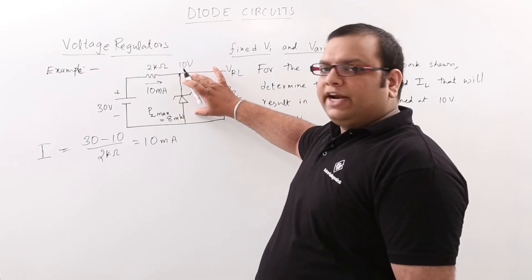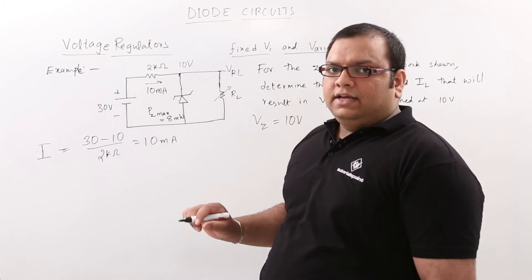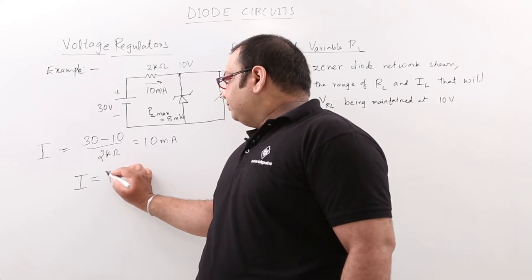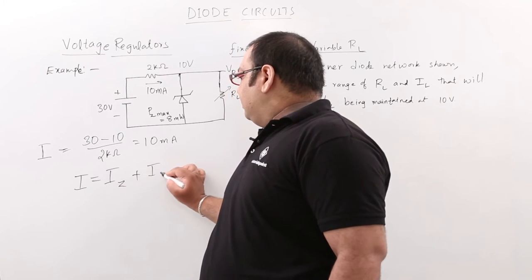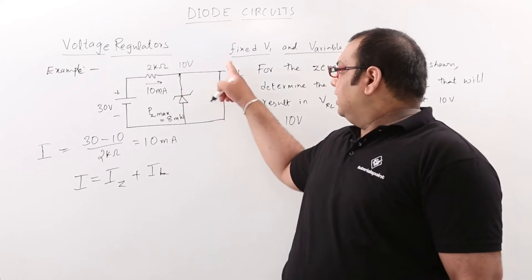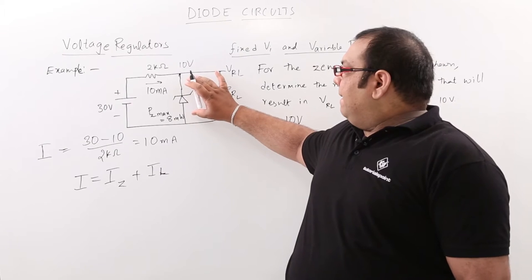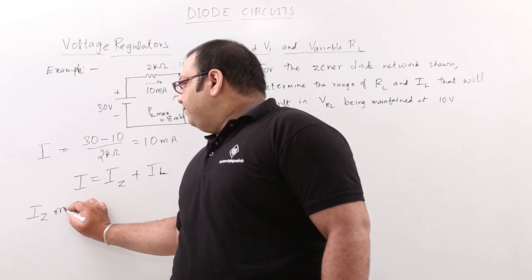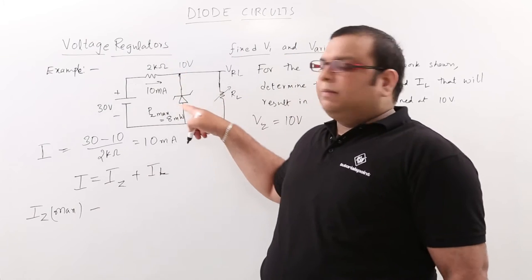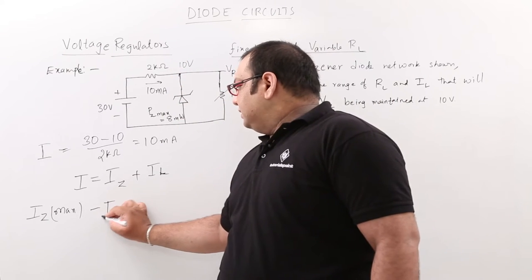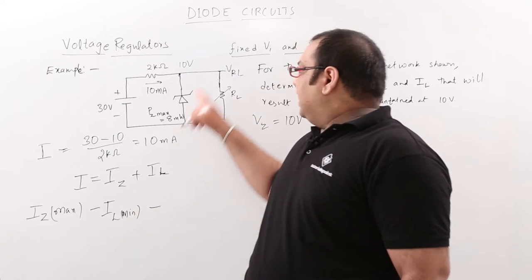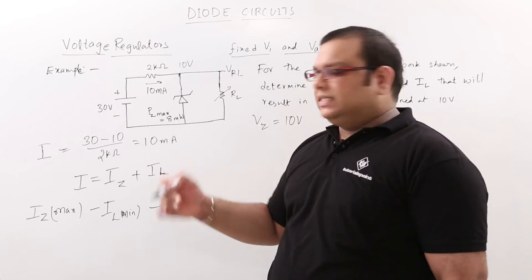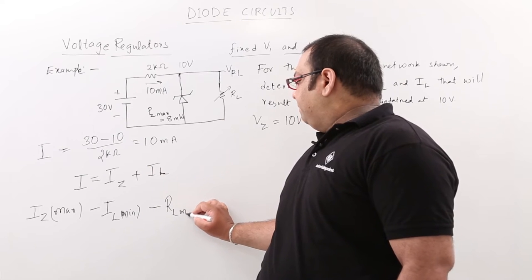This 10 milliamps splits — some current enters the Zener diode and some enters the load resistance. Applying KCL at this node: I = IZ + IL. When IZ is maximum, IL is at minimum, which means least current through RL, and therefore RL is maximum.